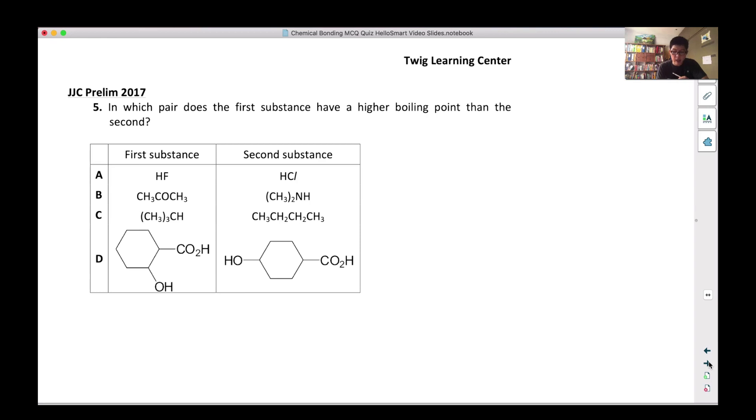In which pair does the first substance have a higher boiling point than the second? Okay, very quickly I'll say this molecule has H-bond, okay, because we only look at high boiling point right, we only look